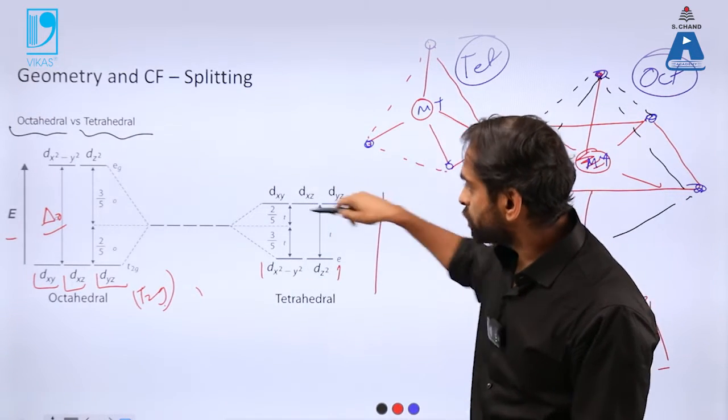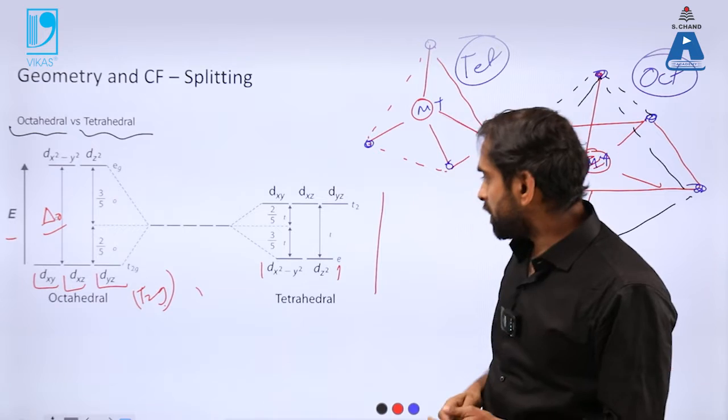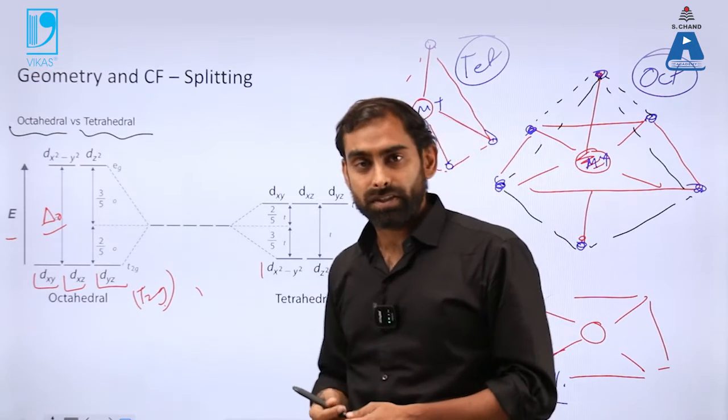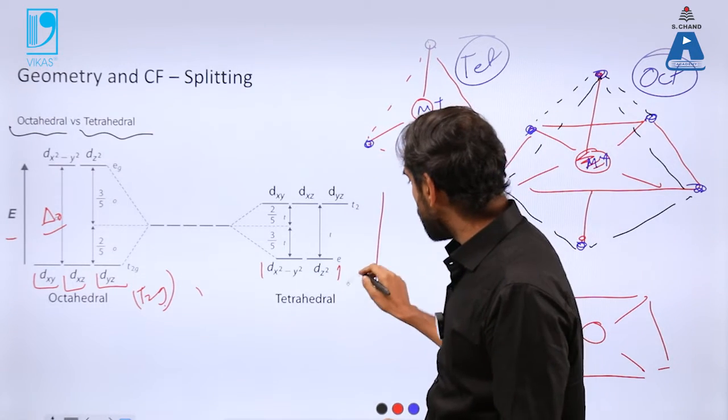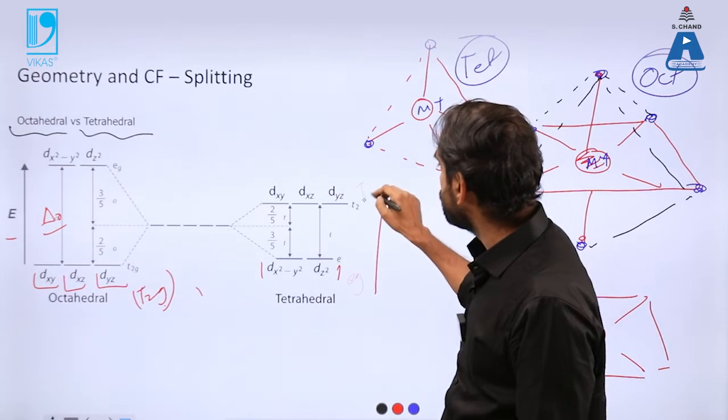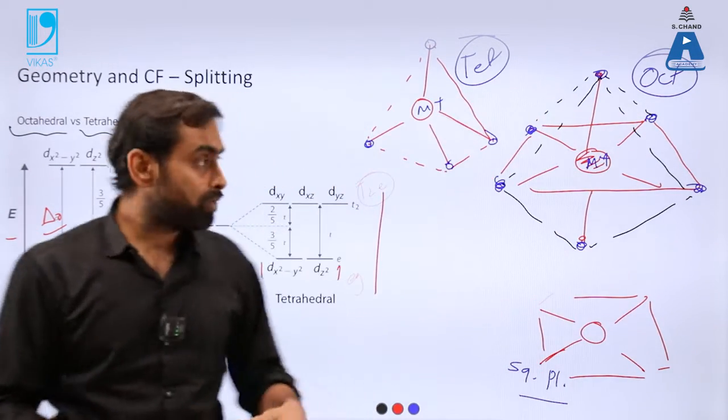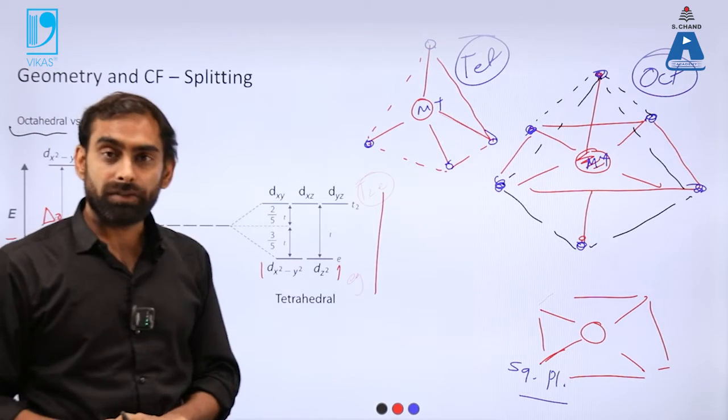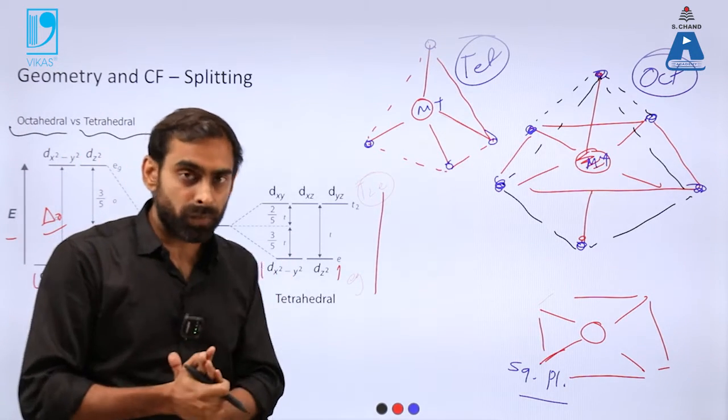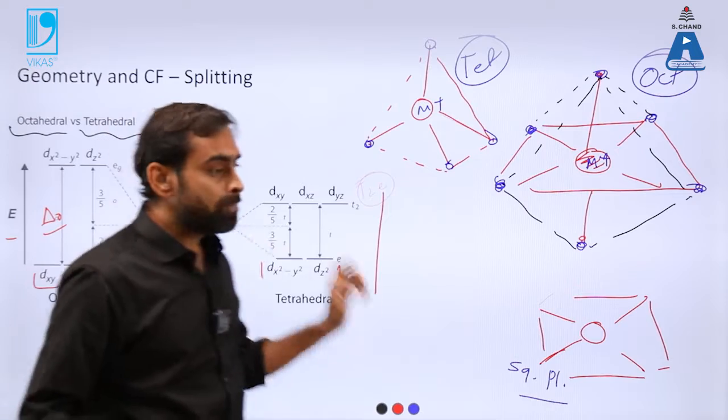And that's why you can see xy, yz, and zx over here and x square minus y square and z square which we call eg over here. So there is a complete inversion of eg and t2g in contrast to octahedral when you compare it with tetrahedral. I hope that point is very much clear to you and you understood that how geometries will decide the nature of splitting.